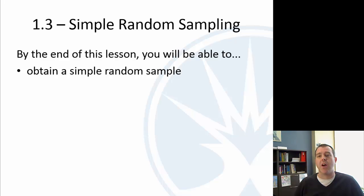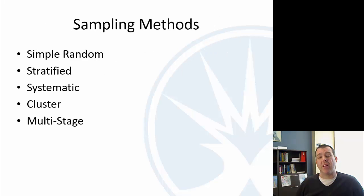We're going to actually do two sections together. Here we're going to talk about random sampling. The first section, section 1.3, is about simple random sampling. We're going to also talk about stratified, systematic, cluster, and then what we call multi-stage.